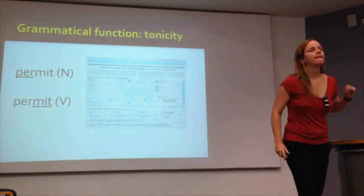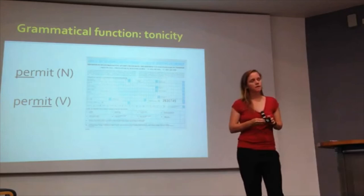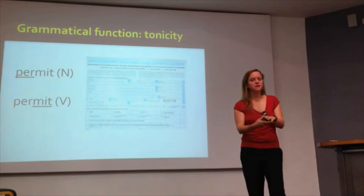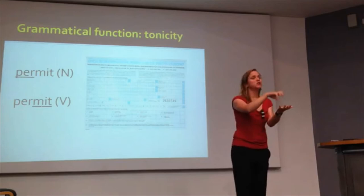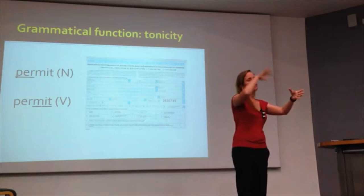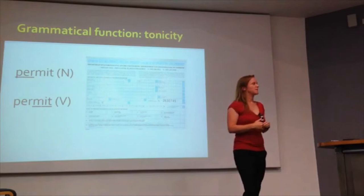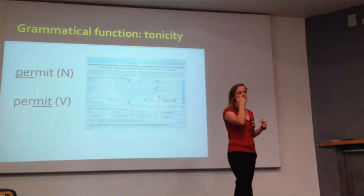To clarify the difference between tonicity and tonality: tonality is breaking things up into intonational phrase units — how you chunk things together. Tonicity is where you place the tonic, where you place the nuclear tone within a given IP. If you understand what's going on, that's more important than necessarily knowing the terminology.